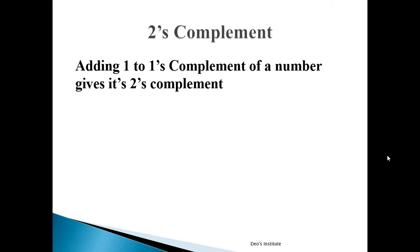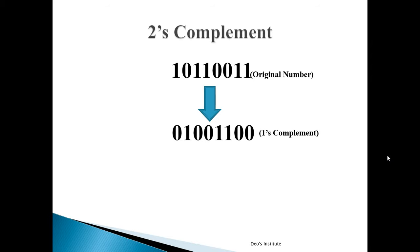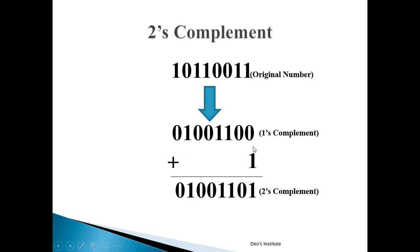To get 2's complement, we have to add 1 to the 1's complement of a number. This is your original number; this is the 1's complement obtained by changing 1 to 0 and 0 to 1. If you add 1 to the 1's complement, you will get the 2's complement. So you take the 1's complement, add 1, and you get the 2's complement.